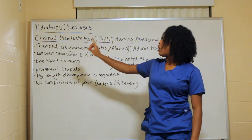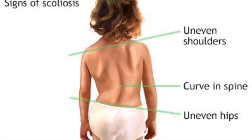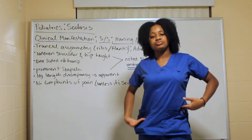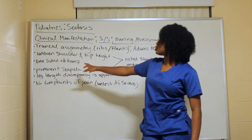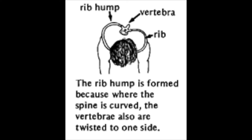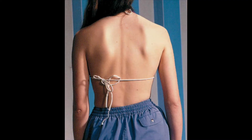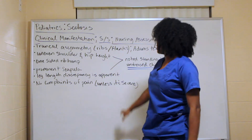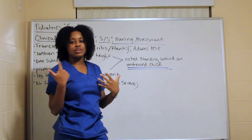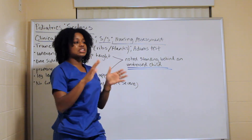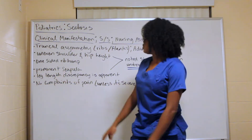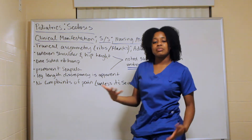Other signs include asymmetrical or uneven shoulders, uneven hip height, a one-sided rib hump, and prominent scapulas on the back. All of this is noted while standing behind a child who is undressed — no special positioning required; from a distance you can see all of those asymmetries. Leg length discrepancy may also be apparent.